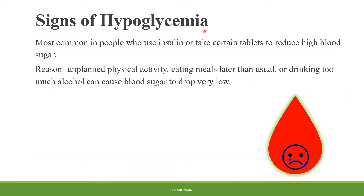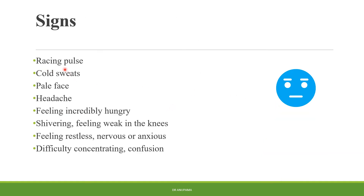Signs of hypoglycemia are most common in people who use insulin or take certain tablets to reduce high blood sugars. Causes include unplanned physical activity, eating meals later than usual, or drinking too much alcohol, which can cause blood sugars to drop to very low levels. Signs include a racing pulse, cold sweats, pale face, headache, feeling incredibly hungry, shivering, feeling weak in the knees, feeling restless, nervous, anxious, and difficulty in concentration or confusion.